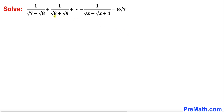Welcome to pre-math. In this video we are going to solve this given series that involves radicals: 1 divided by square root of 7 plus square root of 8, plus 1 divided by square root of 8 plus square root of 9, and goes all the way to 1 divided by square root of x plus square root of x plus 1, equals 8 times square root of 7.